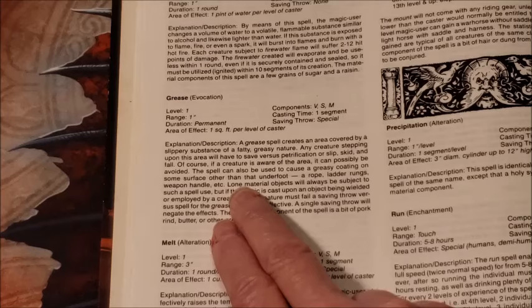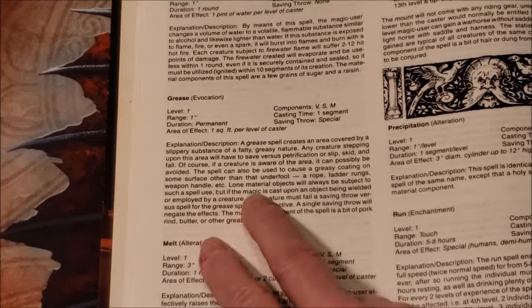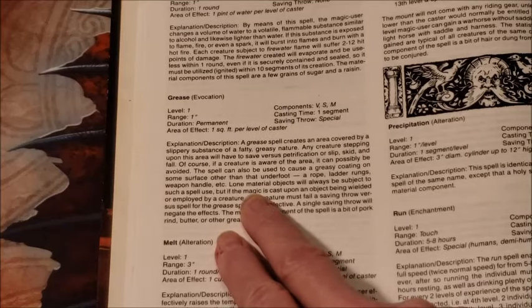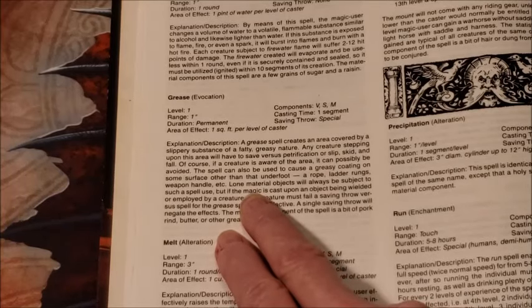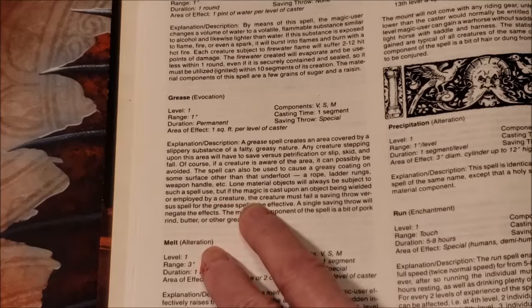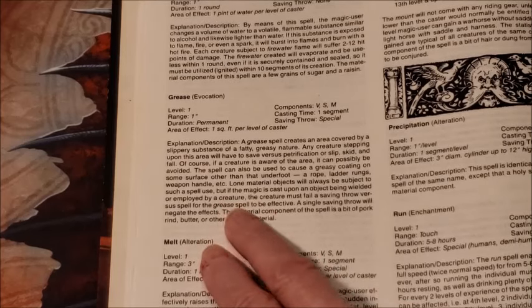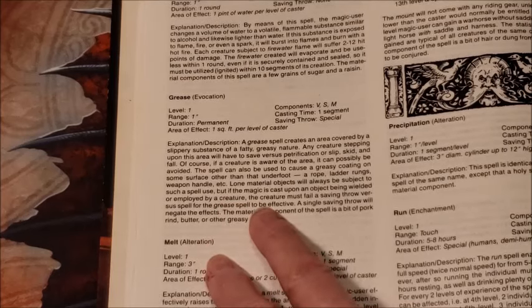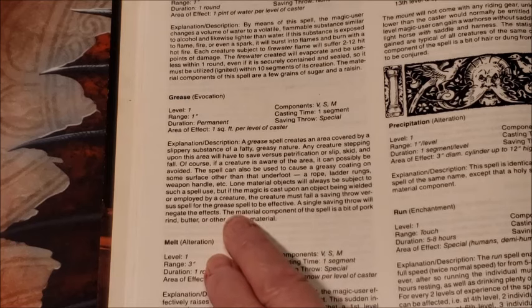Long material objects will always be subject to such a spell use, but if a magic user is casting upon an object being wielded or employed by a creature, the creature must fail a saving throw versus spell for the Grease spell to be effective. A single saving throw will negate the effects.